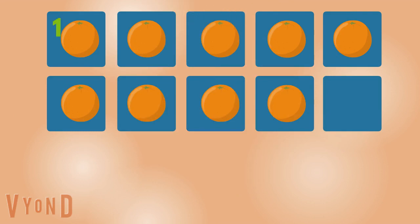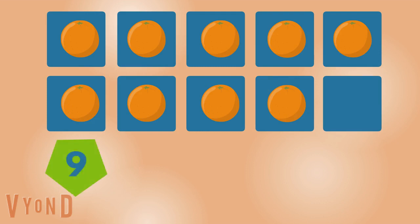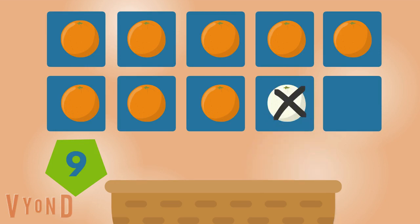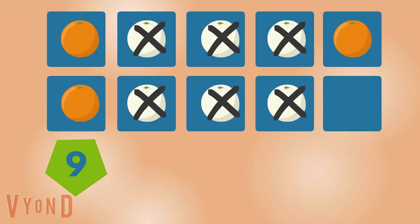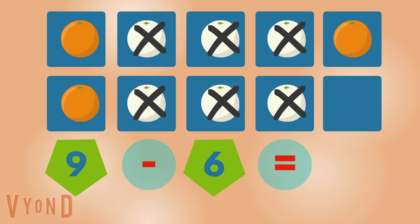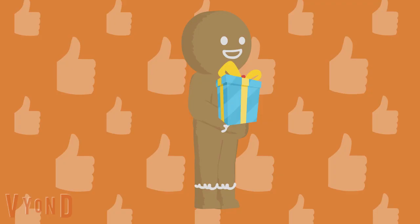Orange. One, two, three, four, five, six, seven, eight, nine. Nine oranges. How many oranges are left? One, two, three, four, five, six. One, two, three. There are three oranges left. Good job.